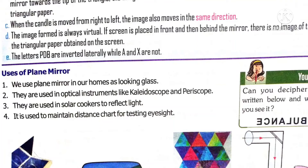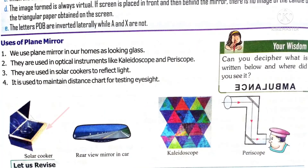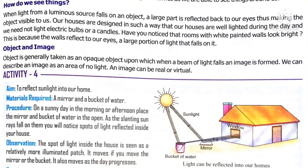What are the uses of a plane mirror? Plane mirrors are used in combs as a looking glass. They are used in kaleidoscopes and periscopes, in solar cookers, and also for testing eyesight. We can see objects around us by the process of reflection. When light falls on an object, it reflects from the surface of the object, and because of this reflection we can see the surrounding objects.